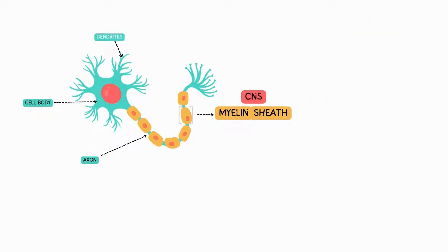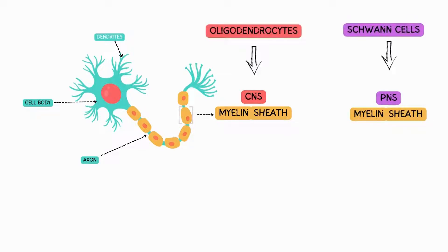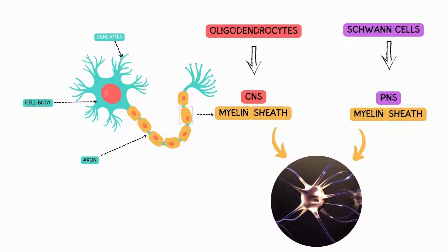CNS myelin is produced by special cells called oligodendrocytes. PNS myelin is produced by Schwann cells. The two types of myelin are chemically different, but they both perform the same function to promote efficient transmission of a nerve impulse along the axon.